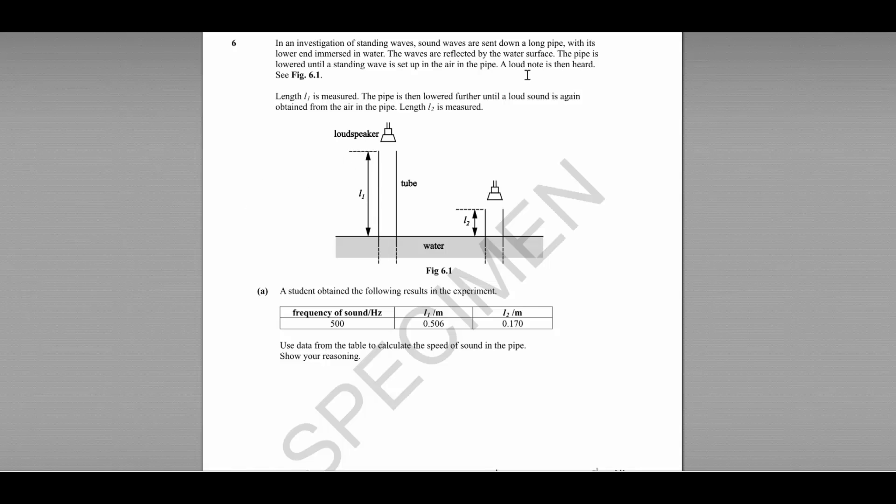Question six is a question about standing waves. Standing waves are being sent down a long pipe with the lower end of the pipe immersed in water, so the waves are being reflected back by the surface of the water and the pipe is lowered until a standing wave is set up in the pipe.